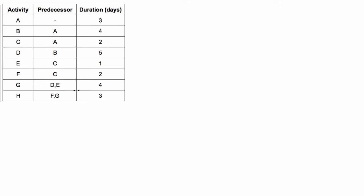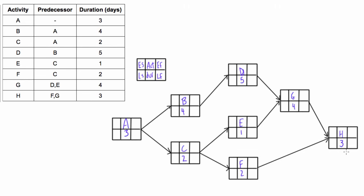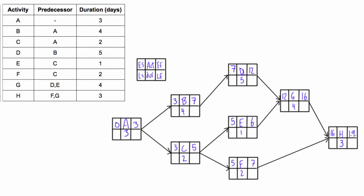By now, if you've been watching these tutorials, you already know how to draw the PDM network diagram for this, so let's go ahead and do that — it looks just like this. Then we can do the forward pass to find the early start and early finish of each activity, and the backward pass to find the late start and late finish. Now we can calculate the total float of each activity. We'll write that above each node, and I'll just write the value without the TF label.